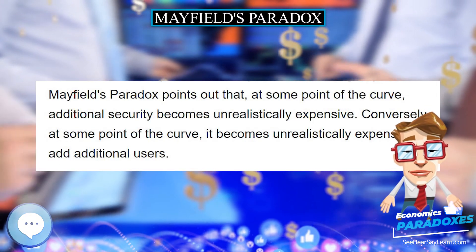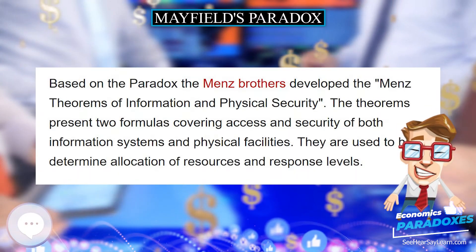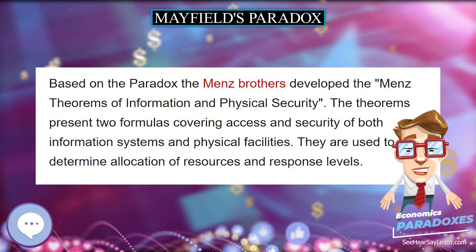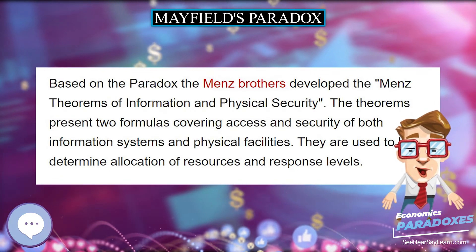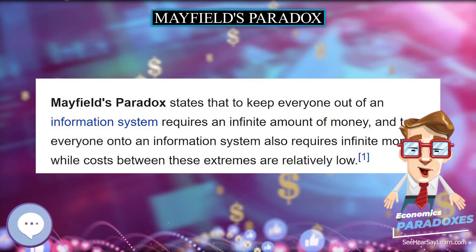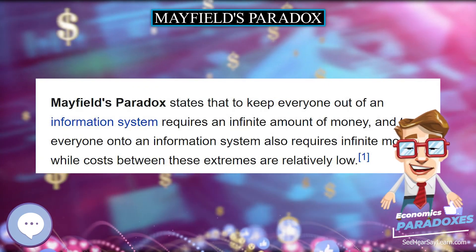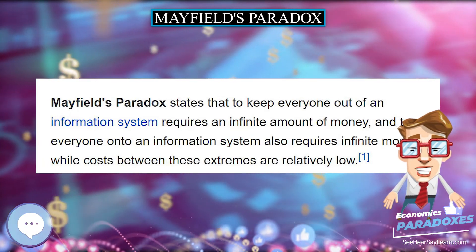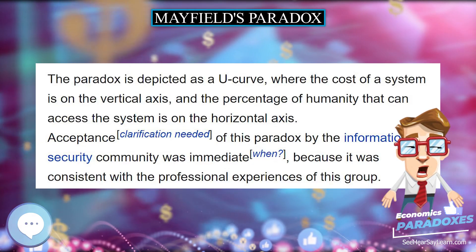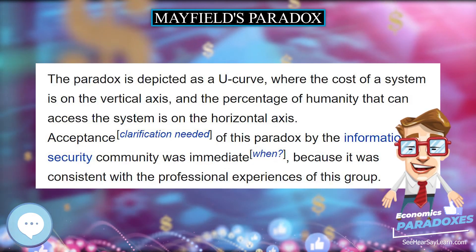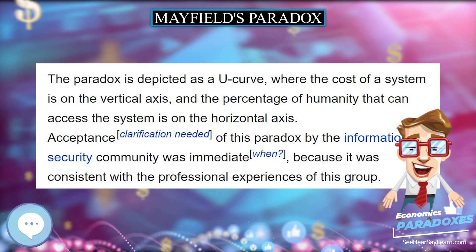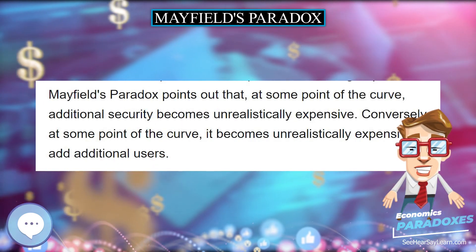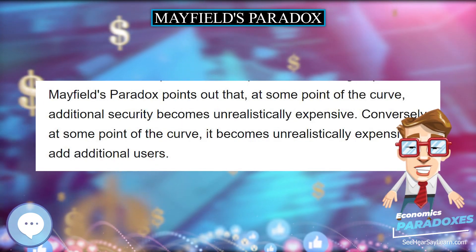Based on the paradox, the Mens brothers developed the Mens theorems of information and physical security. The theorems present two formulas covering access and security of both information systems and physical facilities, and are used to help determine allocation of resources and response levels.